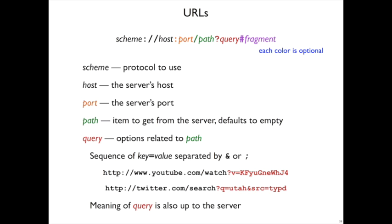The query part, like the path, has an interpretation that's up to the server. It's a kind of extra dimension of the request, useful because it makes sense to have a base path and then some options — options about how to get the file or options for a command. For example, if you're watching videos for class, you probably went to youtube.com slash watch, a request to watch a particular video, parameterized by a query specifying which video. Or if you search for Utah at Twitter, it uses a URL with the search command and parameters for Utah and source equals typed. Multiple query parameters are key equals value, separated by ampersand — you'll also sometimes see a semicolon used.